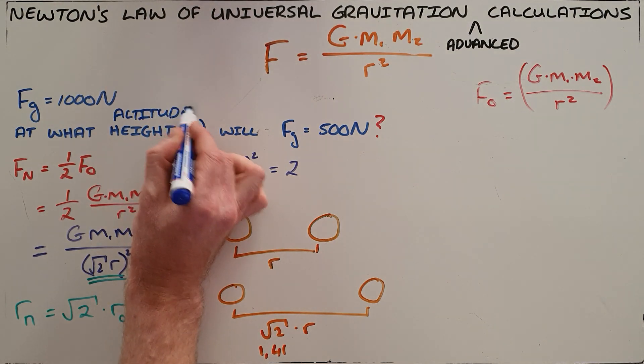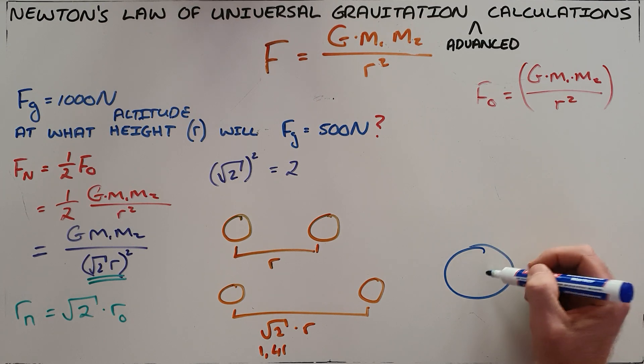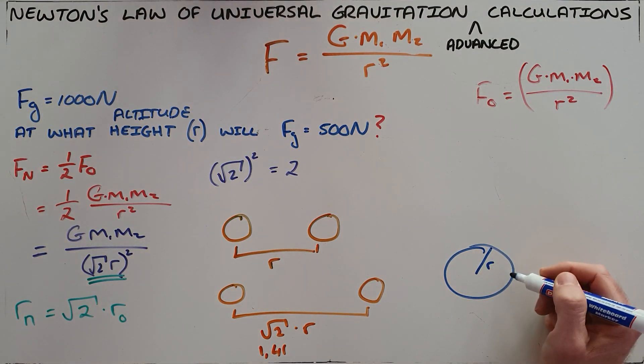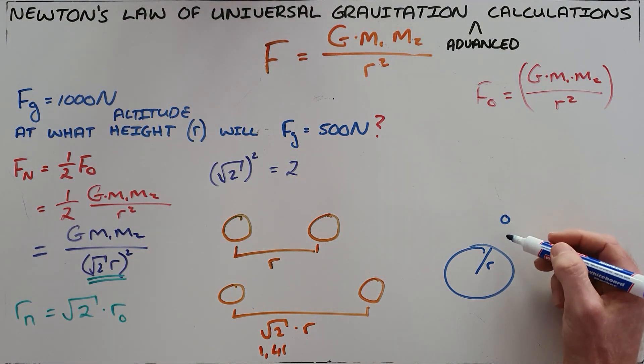Now we know that altitude refers to distance above the surface of the earth. So we know that the earth has a radius of r, and now this new body has been placed a certain distance away from the center of the earth.